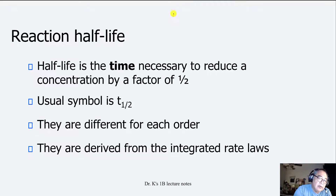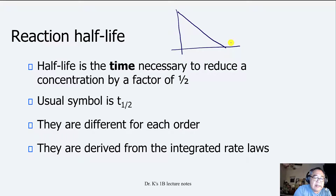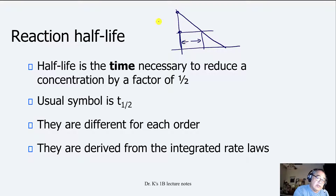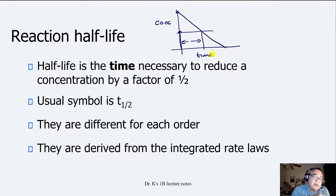For example, if I have a graph like this and it goes like this, how long does it take to go from here to half of that value? You go on the y-axis and cut across, so your half-life will be this time interval right here. That would be a zero-order reaction — this is concentration and this is time on this axis. The usual symbol for half-life is T½.